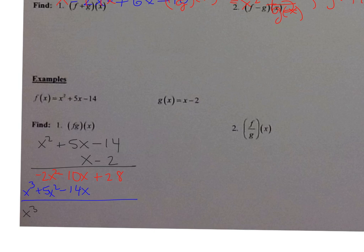And x times x squared is x to the third. Okay, and I'm done. We get x to the third. Negative 2x squared plus 5x squared is positive 3x squared. Negative 10x minus 14x is negative 24x. And then we have plus 28.